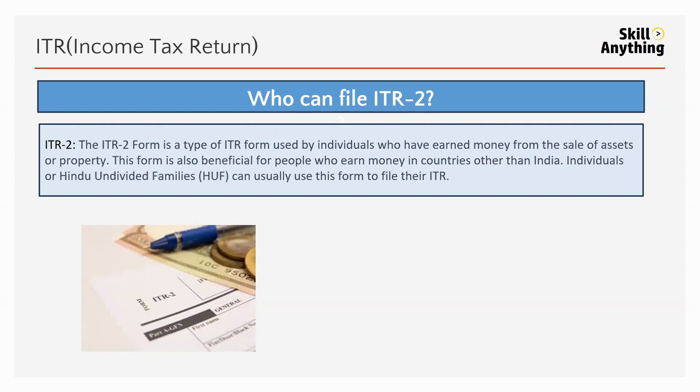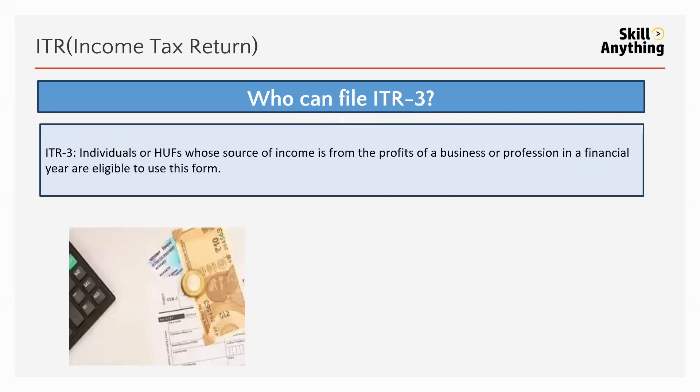Who can file ITR-2? ITR-2 is filed by an individual who earns money from the selling of property or assets. An individual or HUF can use this form to file their ITR.